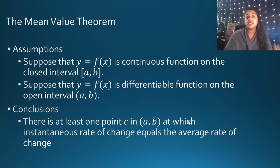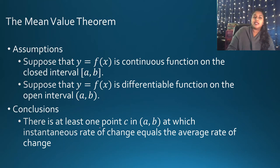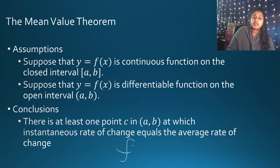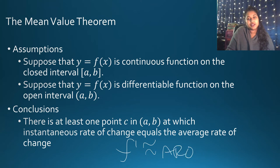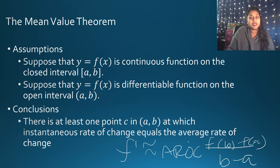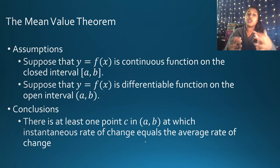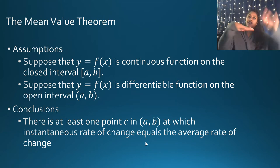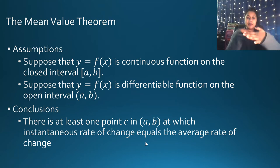At that point, the instantaneous rate of change must equal the average rate of change. Previously, we knew that the instantaneous rate of change — the derivative — was approximately equal to your average rate of change, which is that F(B) minus F(A) all over B minus A formula. The big difference here is it's no longer approximately — it must equal. This is no longer an estimation of the derivative; it is the derivative. You have a secant and tangent line that must be parallel.